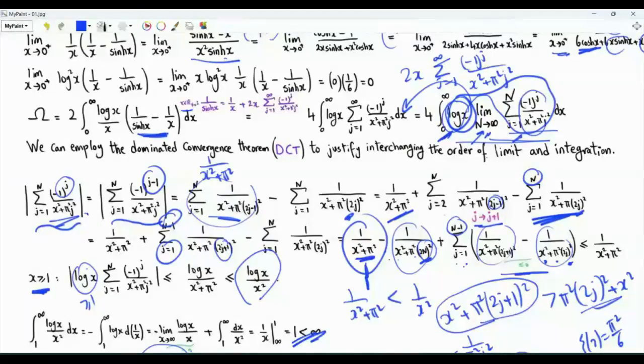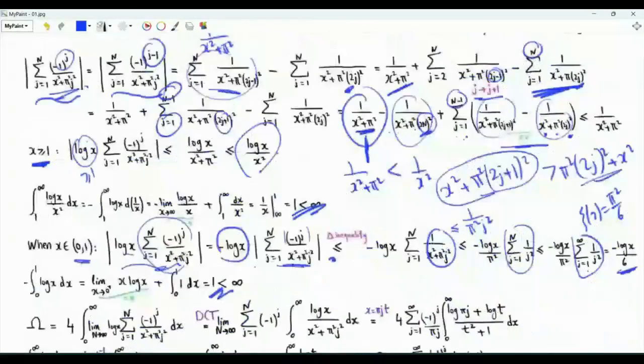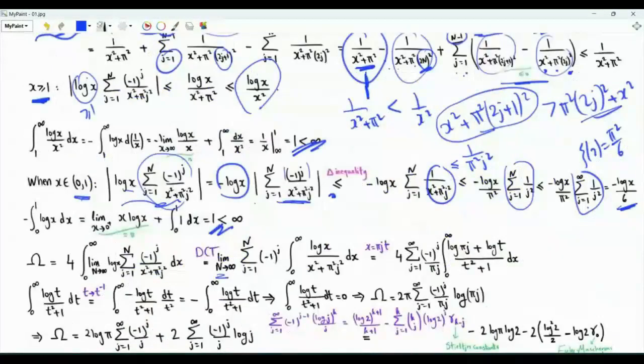We can upper bound the integrand with a function that does not depend on N, only on x, and this function is integrable, giving a finite result when integrated from zero to infinity. We can therefore employ the dominated convergence theorem and take the limit outside, integrating term by term.